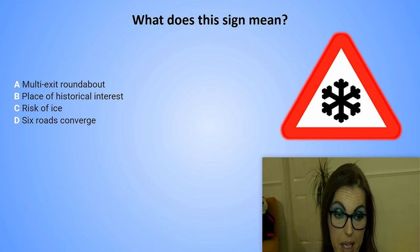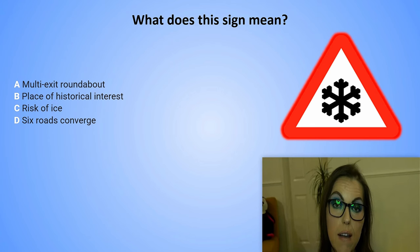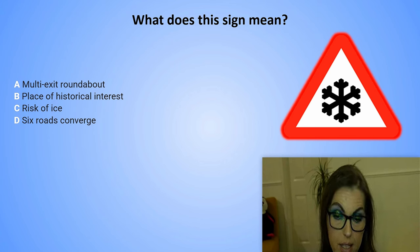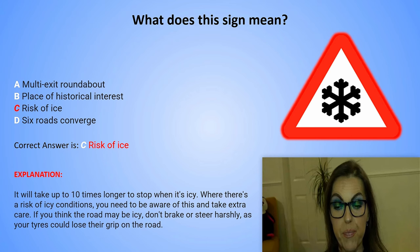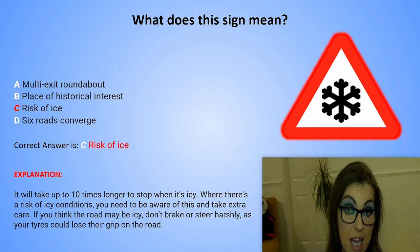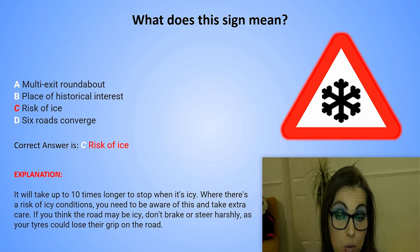What does this sign mean? A. Multi-exit roundabout. B. Place of historical interest. C. Risk of ice. Or D. Six roads converge. The correct answer is C. Risk of ice. Explanation: It will take up to 10 times longer to stop when it's icy. Where there is a risk of icy conditions, you need to be aware of this and take extra care. If you think the road may be icy, don't brake or steer harshly as your tyres could lose their grip on the road.